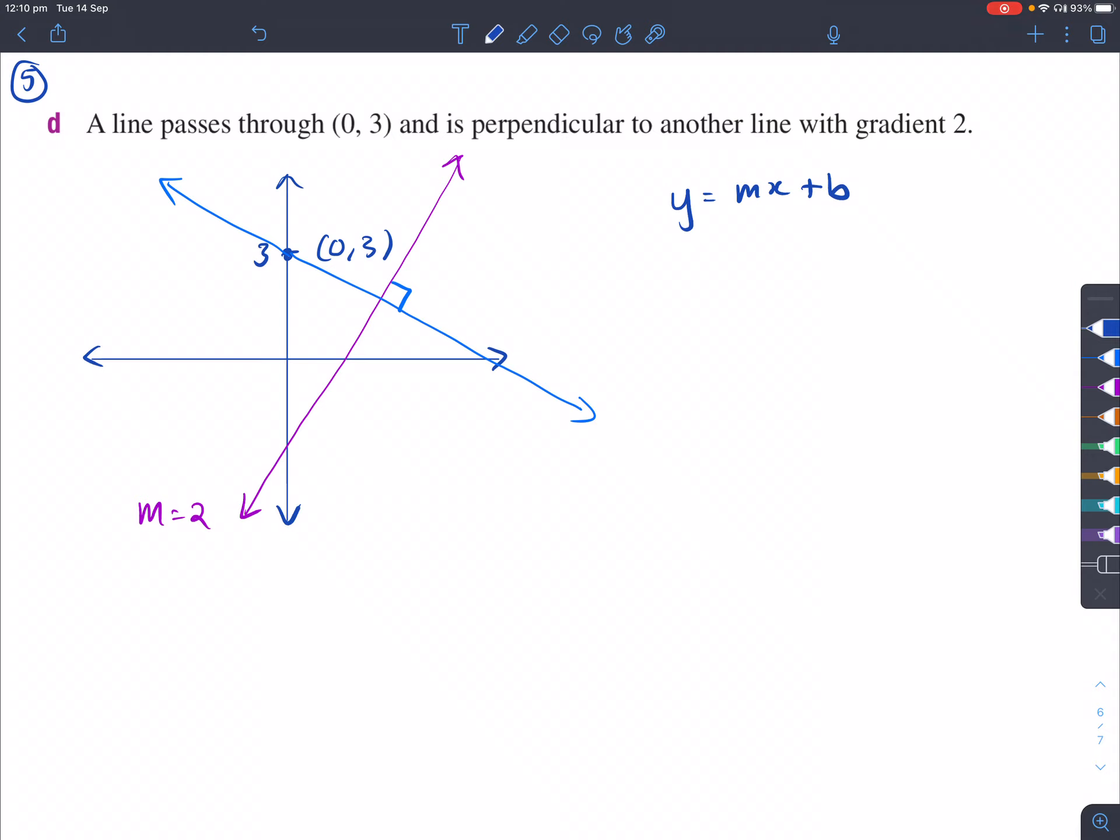We write down y equals mx plus b. The gradient here, m1, is equal to 2, which is the same thing as 2 over 1. To find out what is our gradient of the perpendicular line, we write m2 equals the reciprocal of this, as well as the opposite sign. So that's negative half.